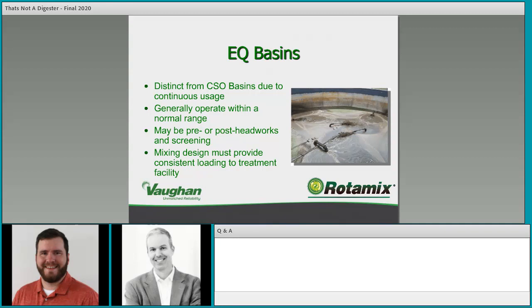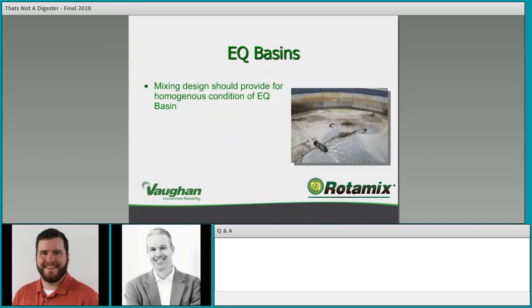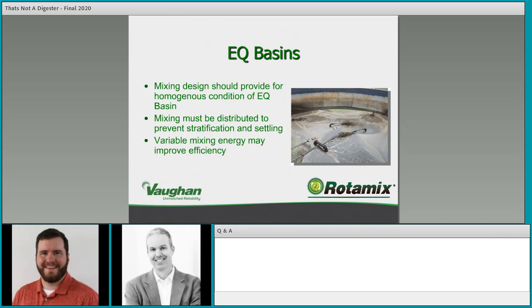The whole point of an EQ basin is to average things. Mixing design should provide a continuous mix that continuously homogenizes, blends, resuspends. You're in between the two factors of homogenization and agitation and resuspension — both are critical aspects of the design. Mixing should be distributed to prevent stratification and settling. Variable mixing energy may improve efficiency — you can vary mixing energy based on tank level, potentially seeing quite a bit of savings when running at lower levels.